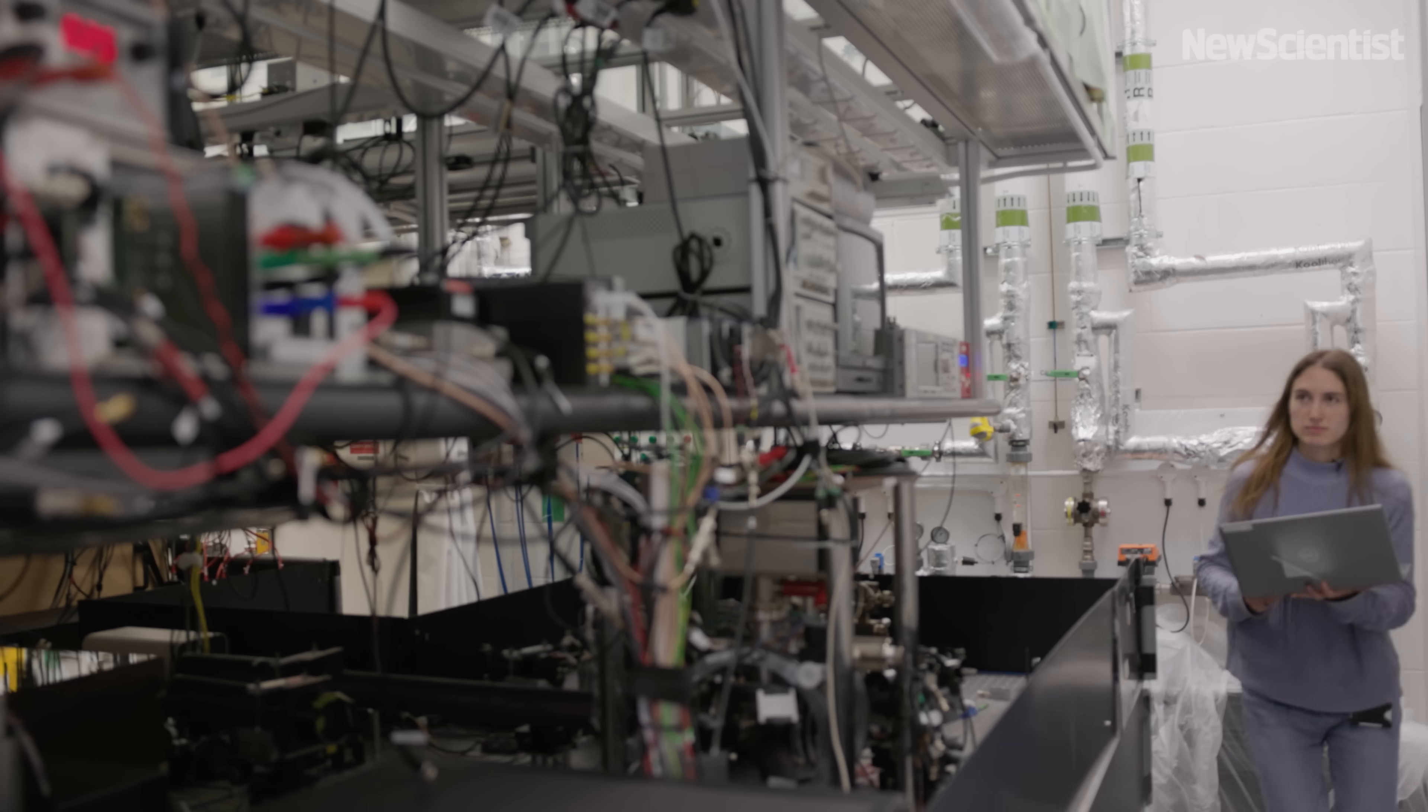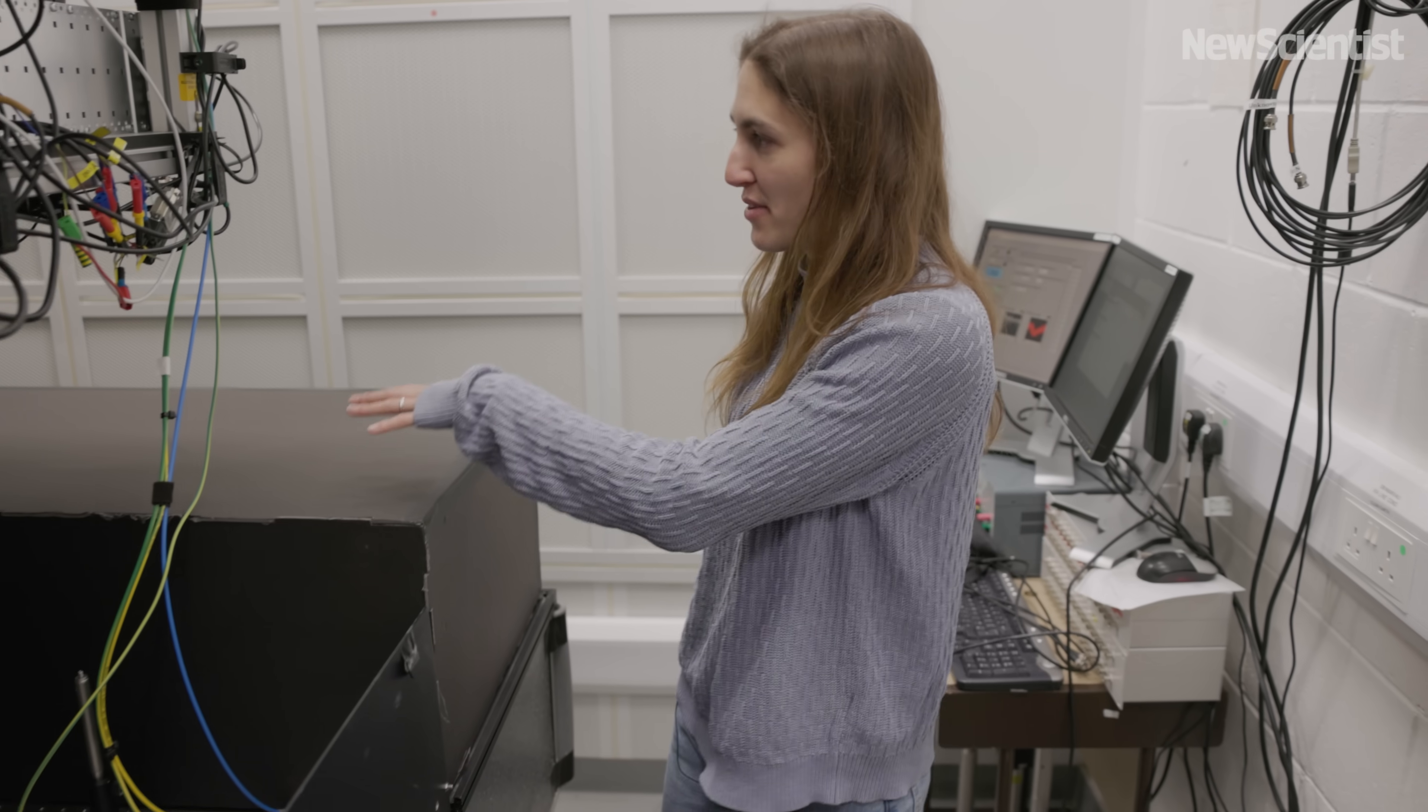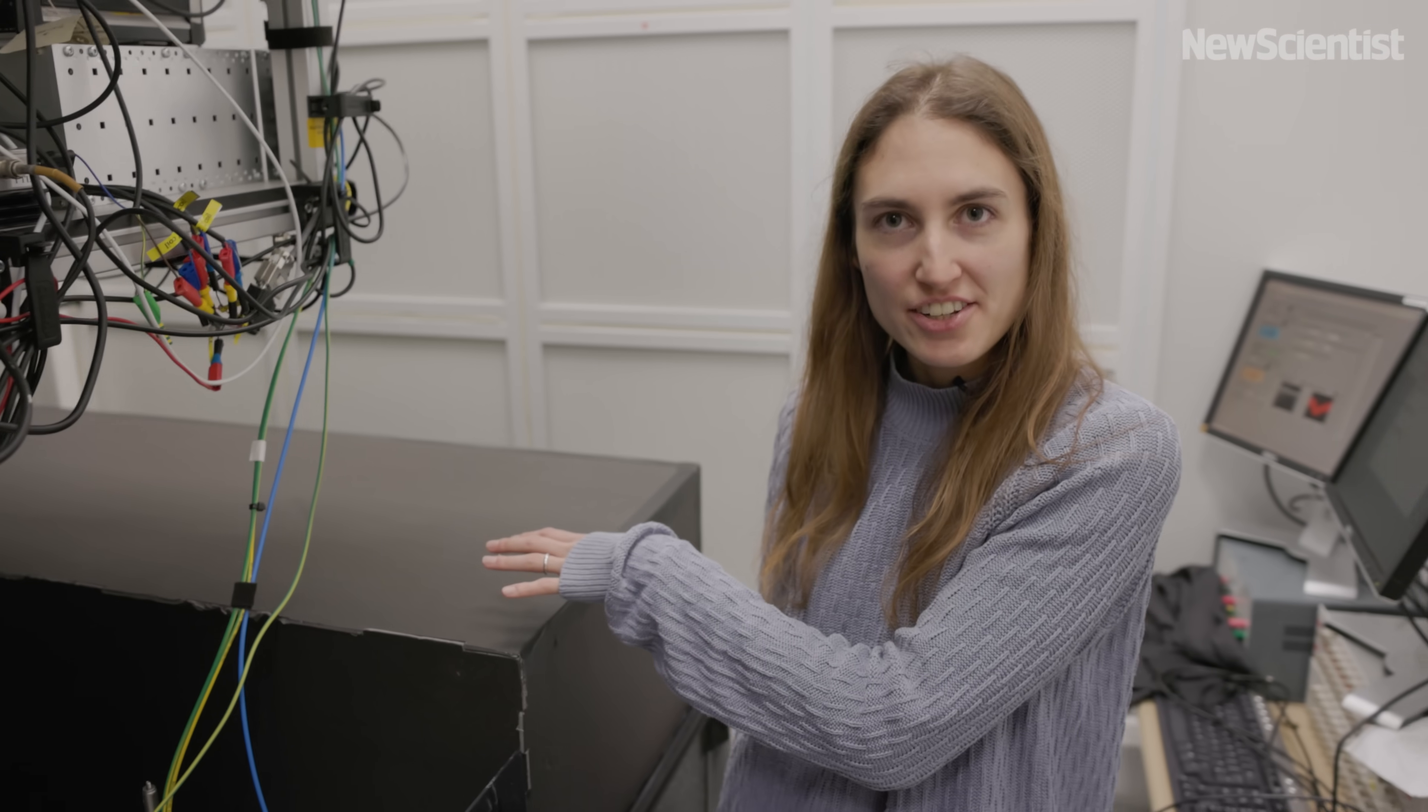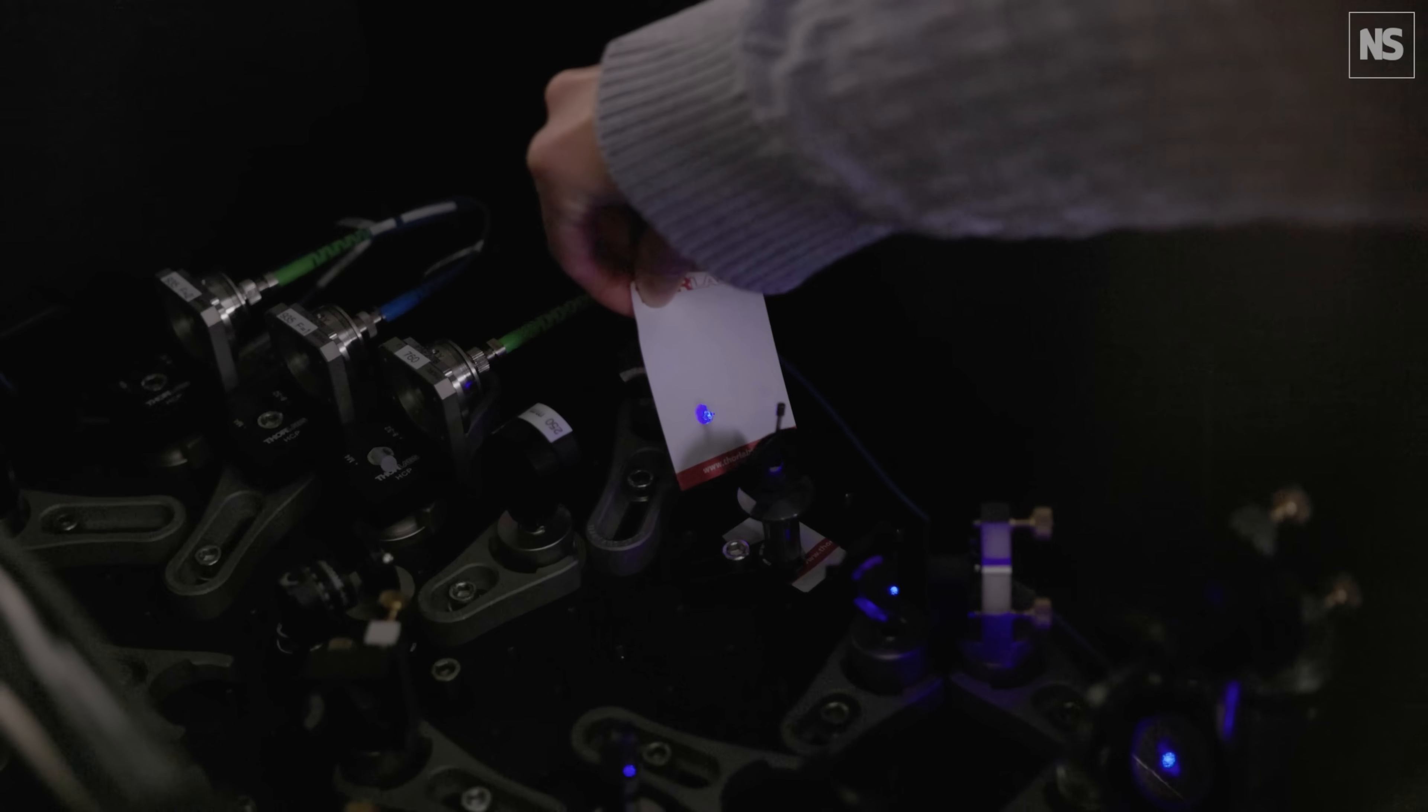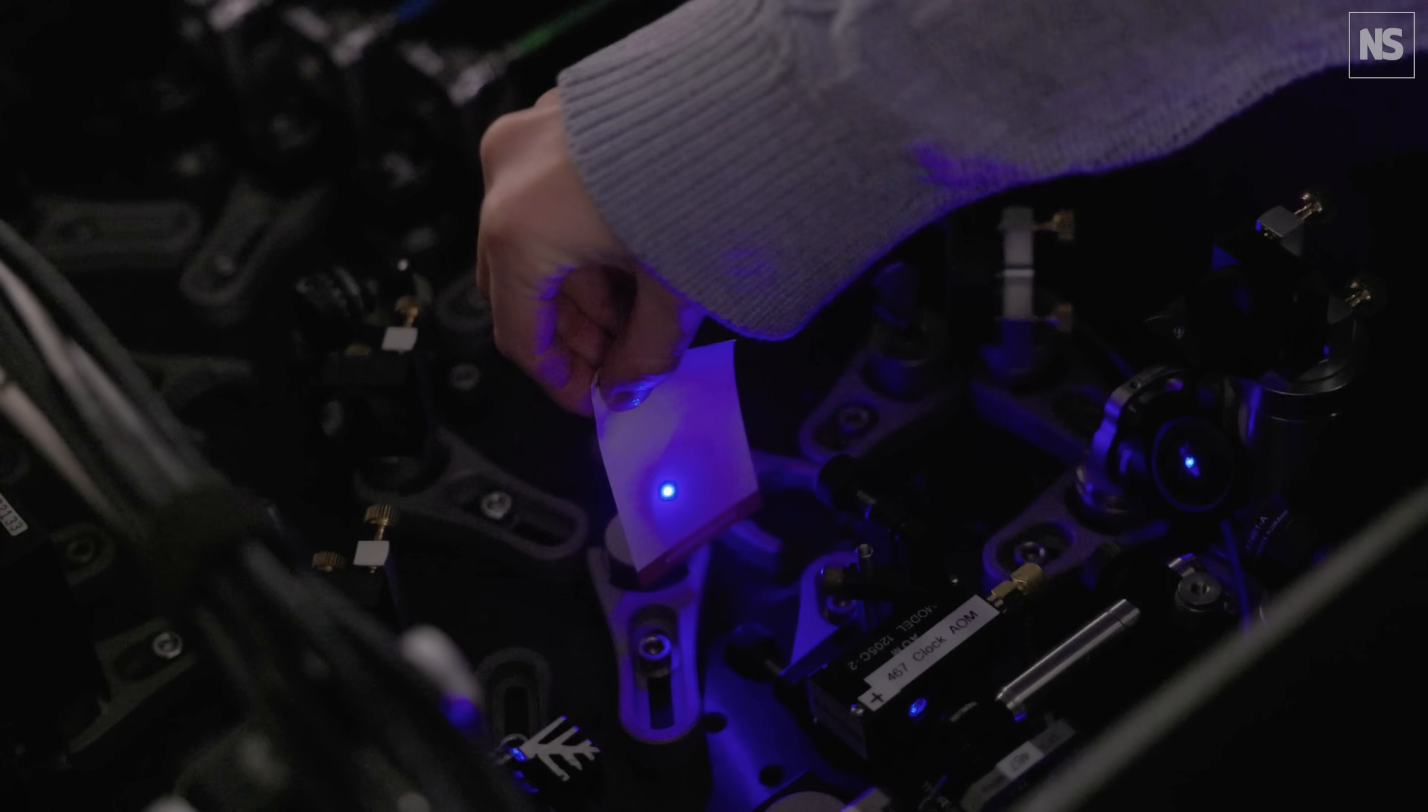This entire lab is the ytterbium ion optical clock. Under here is our actual operational ion trap. Inside our ion trap there is a single ion of ytterbium, which is confined in the middle of the trap by electric fields.